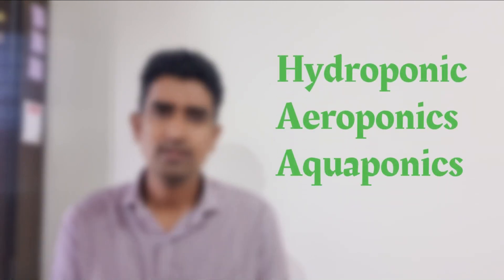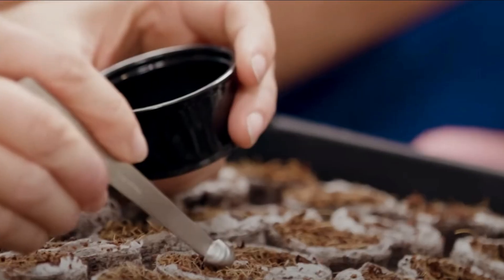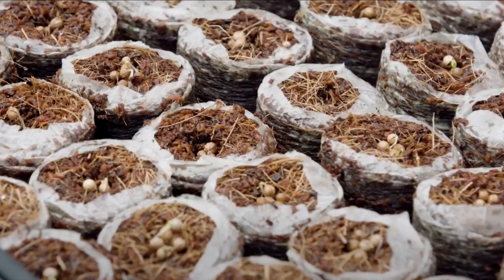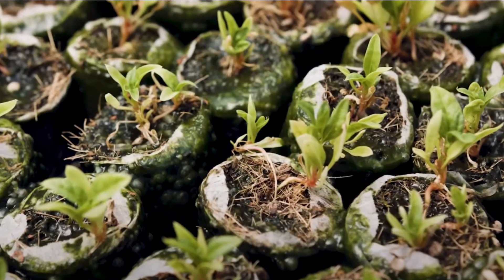Now, we have three steps: hydroponics, aeroponics, and aquaponics. First, we have seeds in a small pot, and we have seeds for two days. We have seeds in a small pot.